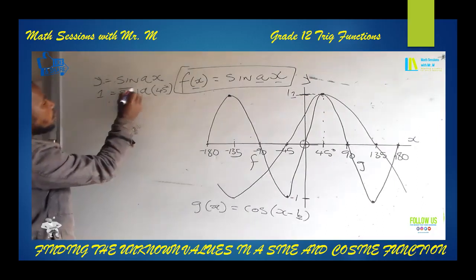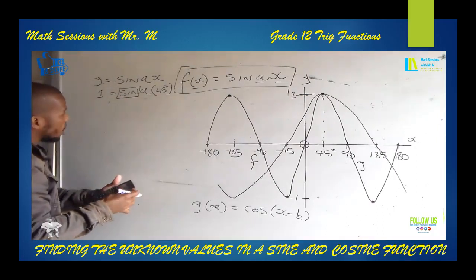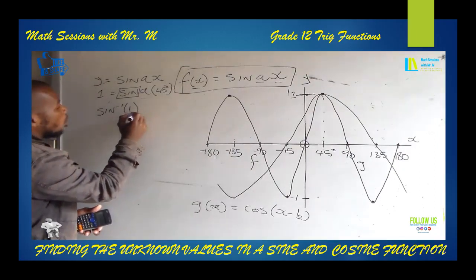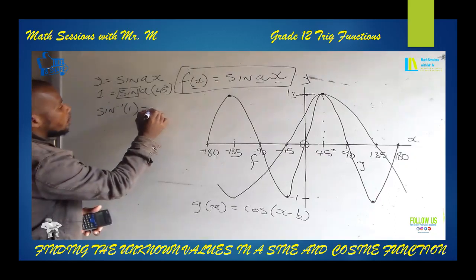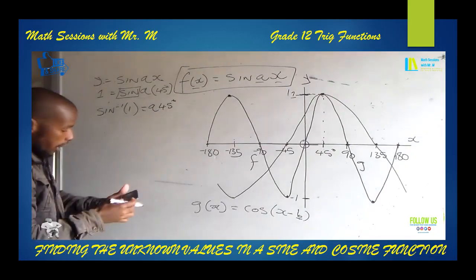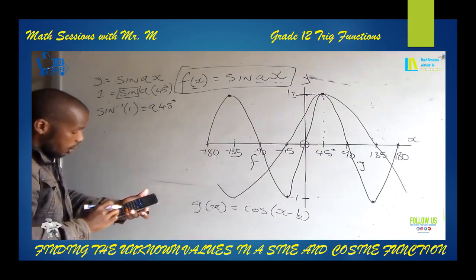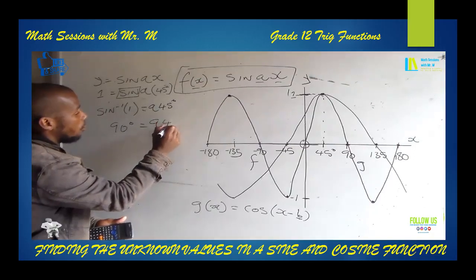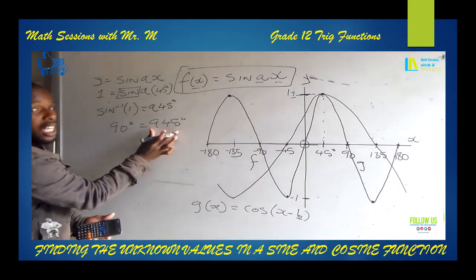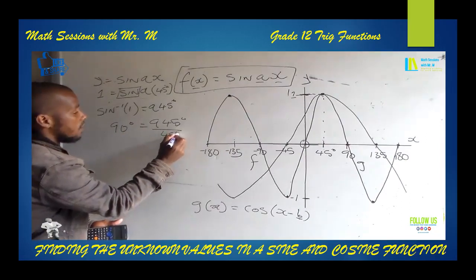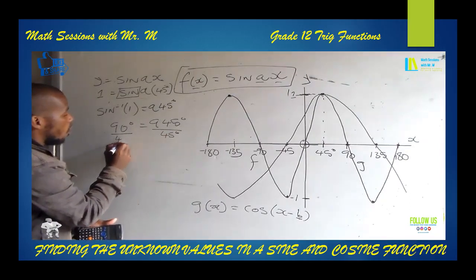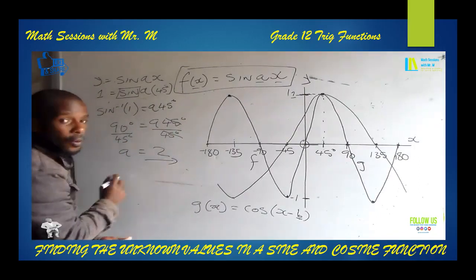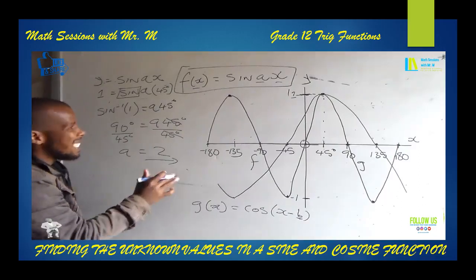We shift the sine to the other side: sine inverse of 1 equals A times 45 degrees. When you put sine inverse of 1 into your calculator, you get 90 degrees. So 90 degrees equals A times 45 degrees. We divide both sides by 45 degrees — A equals 90 divided by 45, which gives A equals 2. Easy and straightforward.